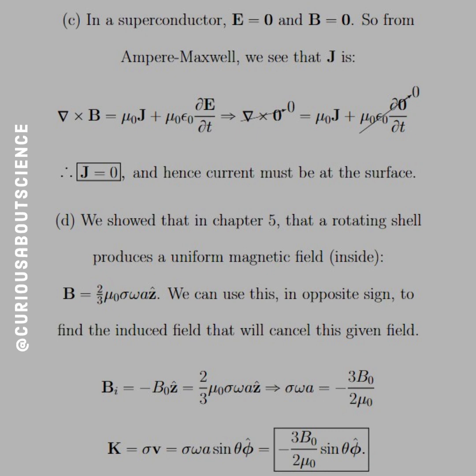Hence, what we see here is that once we solve everything in, the surface current density is equal to negative 3B₀ over 2μ₀ sin θ phi hat direction. That was fun.